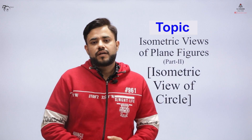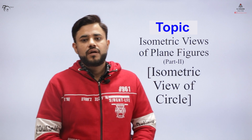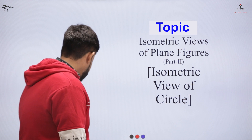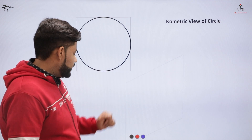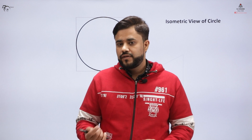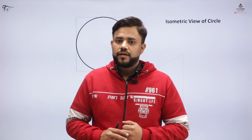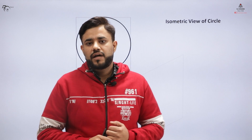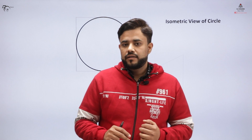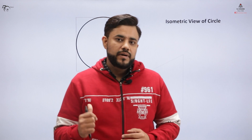In this part, we'll be learning about how to draw the isometric views of a circle. The isometric view of a circle would appear as an ellipse, and that representation is being demonstrated by this example.